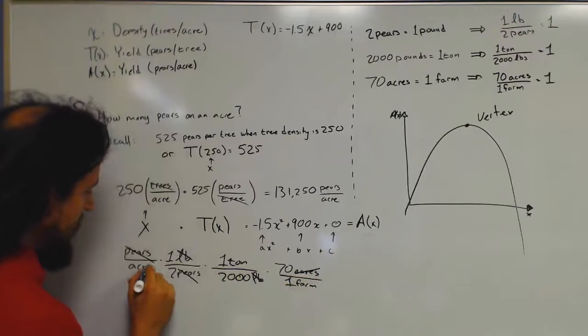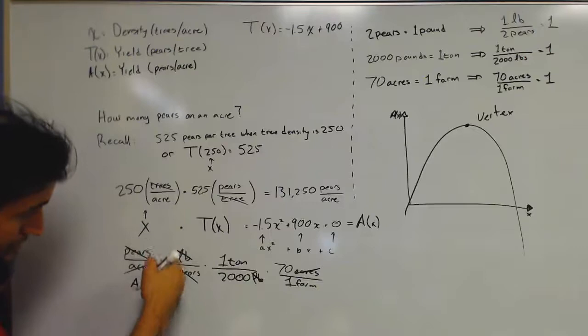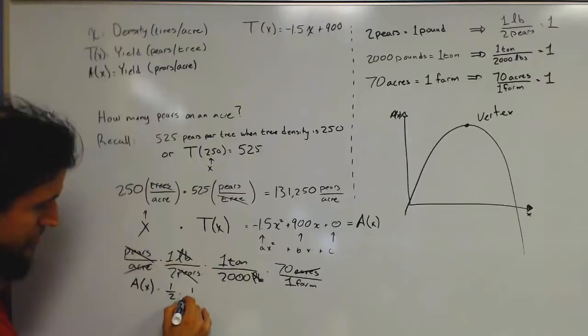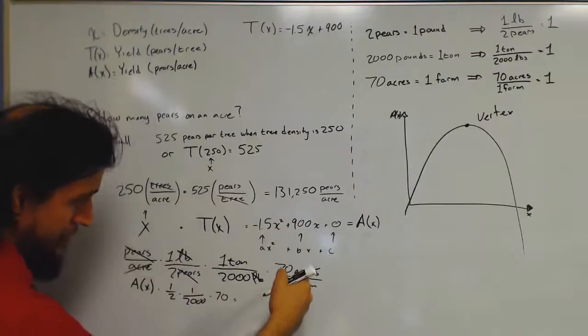So what we end up here with is we go ahead and actually take our original A of x. We multiply it by, this simplifies to one half. This simplifies to one over 2,000. And this simplifies to just 70. So whatever 70 over 4,000 is, we multiply that figure by A of x. And that gives us the entire yield for the entire farm in terms of tons per farm.